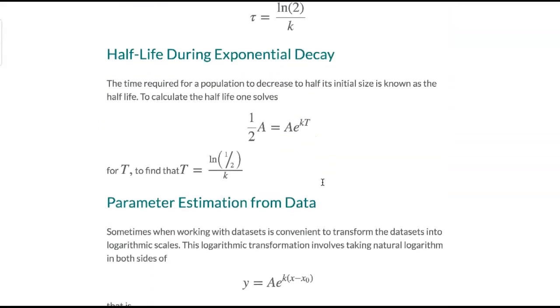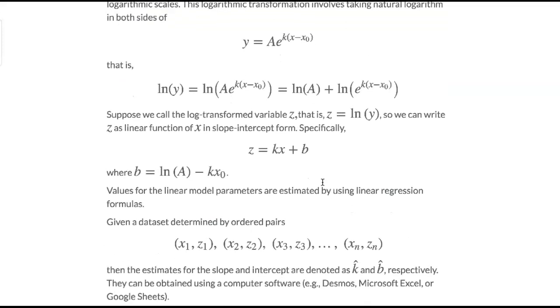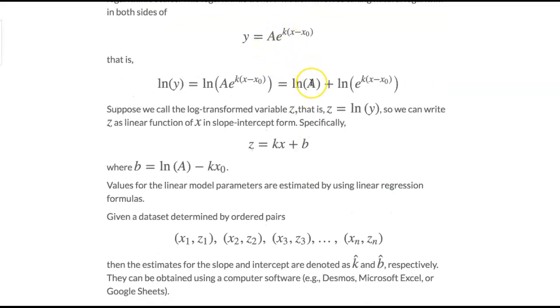We assume that the exponential model has this shape. We take the natural logarithm of both sides and derive a linear equation in logarithmic scale. So the idea would be that if we have an original dataset, we can transform the second column.